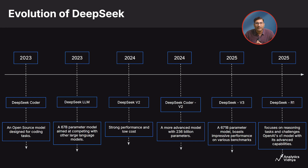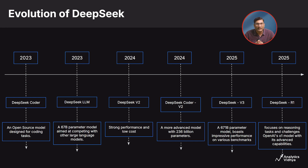Let's talk about the evolution of DeepSeek over the years. In 2023, we saw the launch of DeepSeek Coder, which was an open source model specifically designed for coding tasks. Then came DeepSeek LLM in 2024, a model with 67 billion parameters aimed at competing with other language models on the market. Following that was DeepSeek V2, which demonstrated strong performance while maintaining low costs. In the same year, we also had an upgraded version called DeepSeek Coder V2 with an impressive 236 billion parameters.